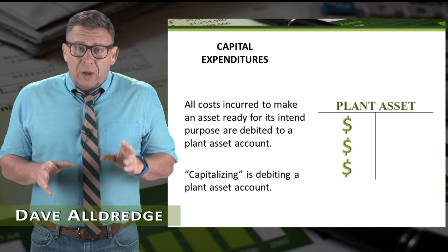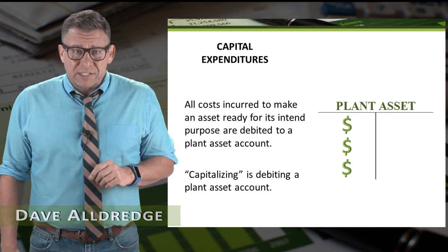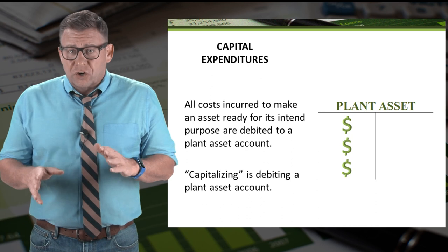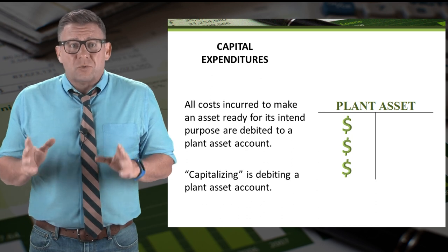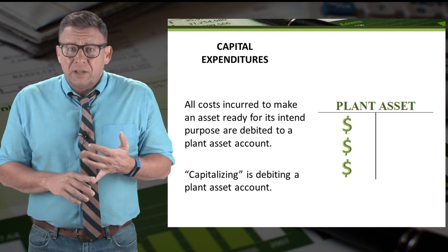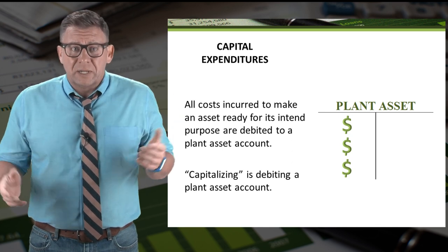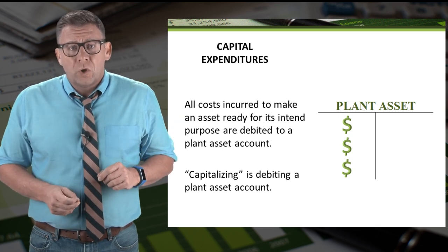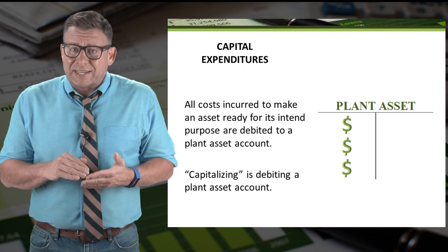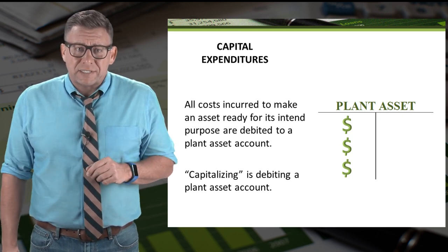If you watched the video about how to determine asset costs, you know that all costs incurred to get an asset ready for its intended purpose get debited to a specific plant asset account, like land or building. We call this process of debiting a plant asset account capitalizing a cost.